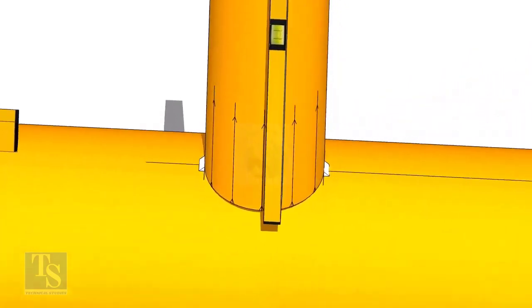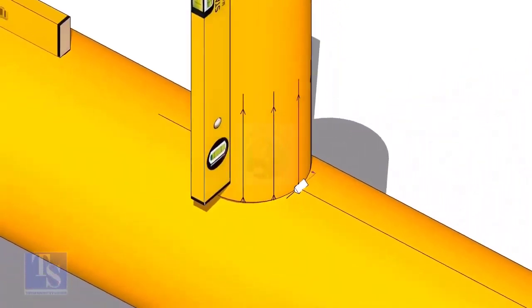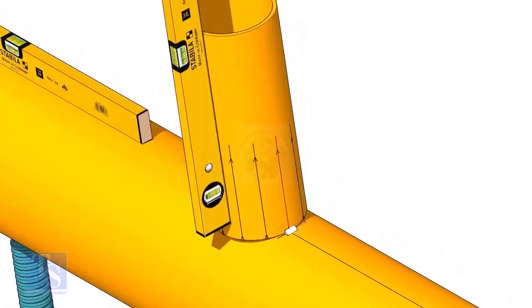Now, make sure the pipe header and the branch are horizontally and vertically level. If required, strengthen the tack weld.